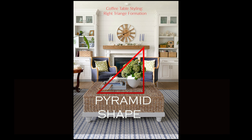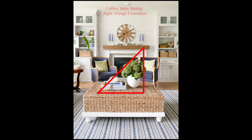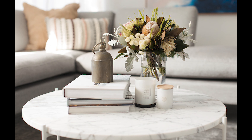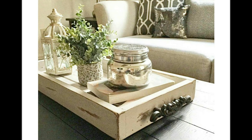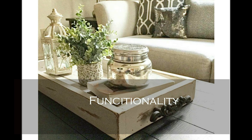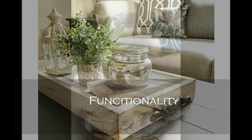Tip number two: use the group with a pyramid shape. Pyramid shape means different heights. Let's say you're using only three items — you start with the tallest one, then go a little lower, and the lowest thing is the third item. Playing with different heights, proportions, and scales creates a dynamic and interesting vibe in your composition.